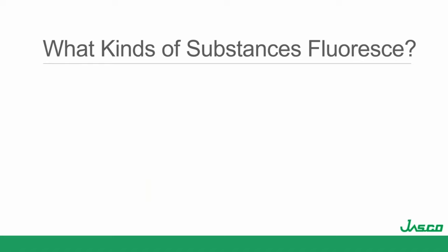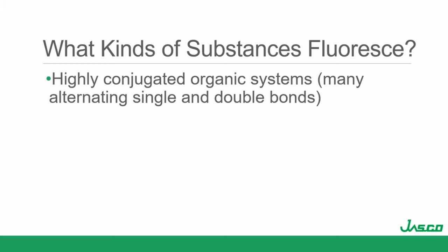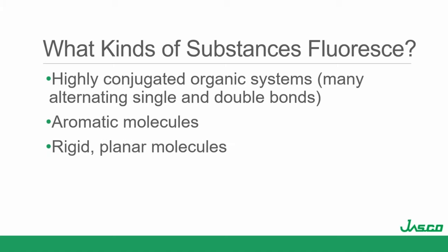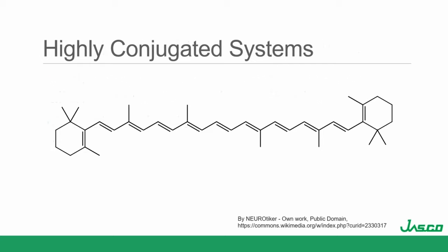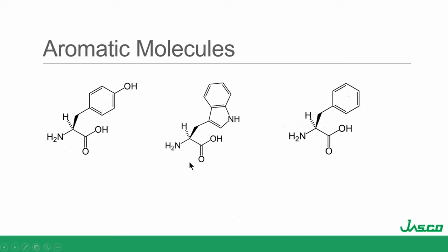Now that we understand the physical chemistry of it, what kinds of substances fluoresce? Highly conjugated organic systems with many alternating single-double bonds, any aromatic species, and rigid planar molecules — that's going to minimize how the molecule can move around and minimize the modes of deactivation. A few examples: a highly conjugated system you might recognize is beta-carotene — highly conjugated, very fluorescent, actually a great chromophore. And my biochemists should like these molecules: tyrosine, tryptophan, and phenylalanine.